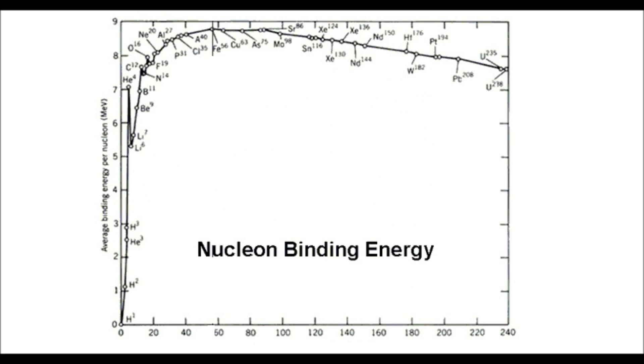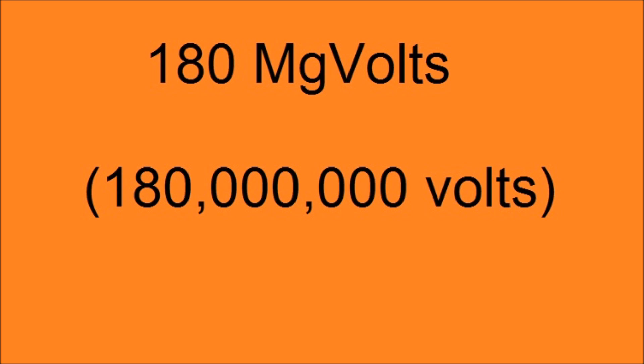The way energy is released during nuclear fission is by the release of extra neutrons, which releases binding energy — energy that binds the protons and neutrons in the nucleus together. Binding energy, when it has nothing to bind, dissipates its energy through an explosion. The explosion of the binding energy released by fission of one atom is not very much, about 180 megavolts.